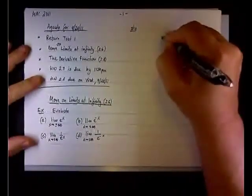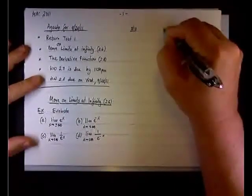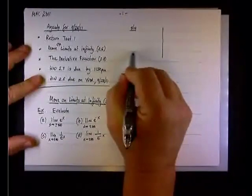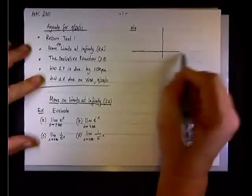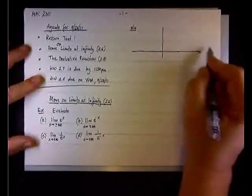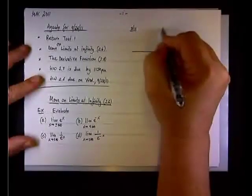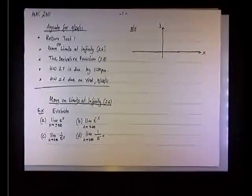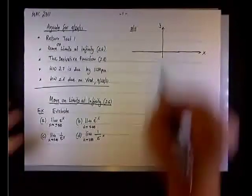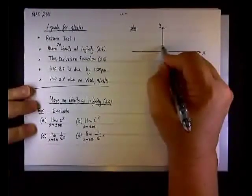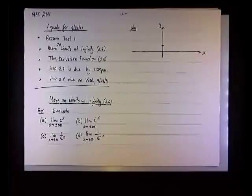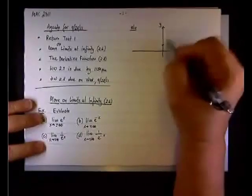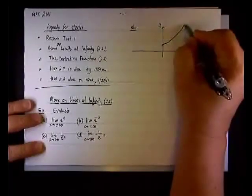The sketch of these two graphs: e to the positive x is a growth function, as you recall — it's exponential growth. When x equals zero, then e to the zero is one. So we know that the function is going to cross the y-intercept at (0, 1), and it's going to grow up exponentially.